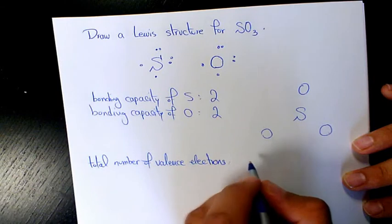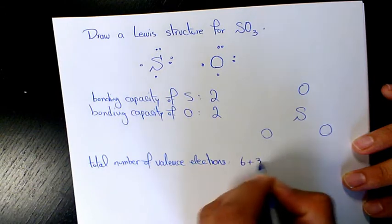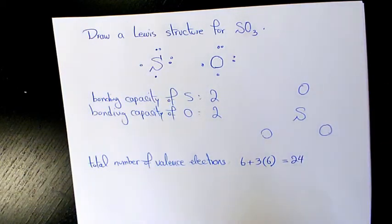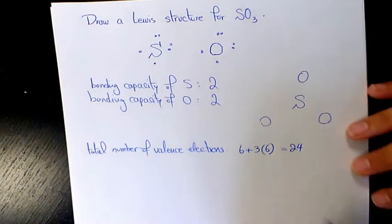which will be 6 plus 3 times 6, that's going to be 24 electrons. Now what I can do, I can